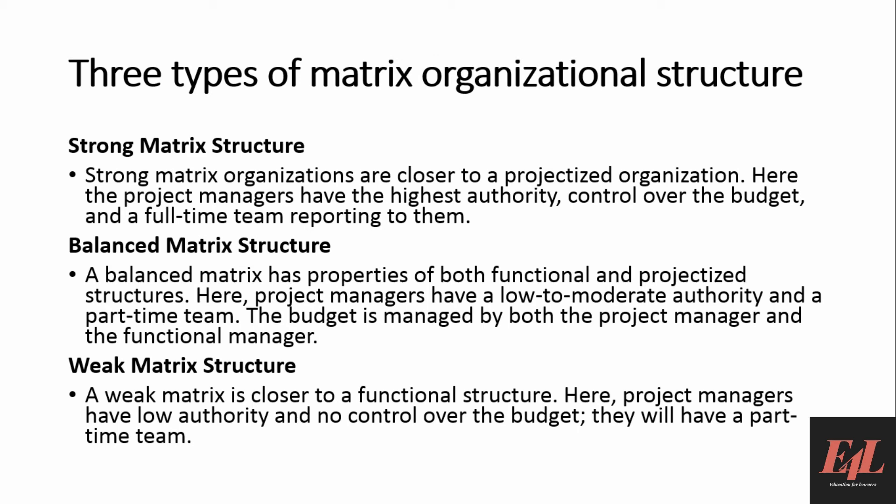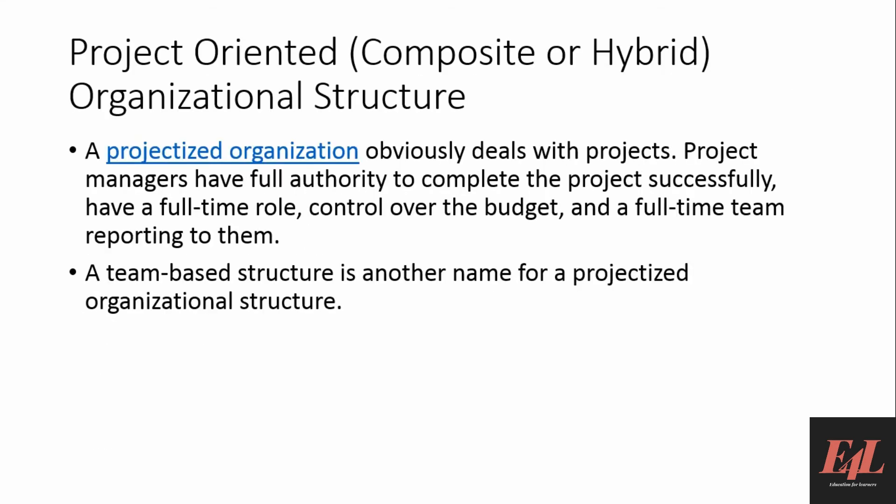In a weak matrix structure, the organization is closer to the functional structure. Here project managers have lower authority and no control over the budget, and they will have a part-time team.